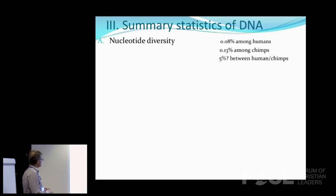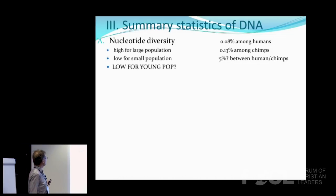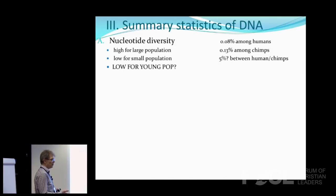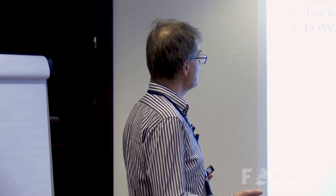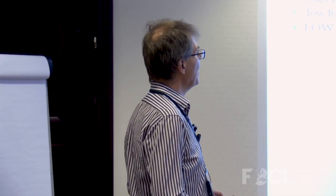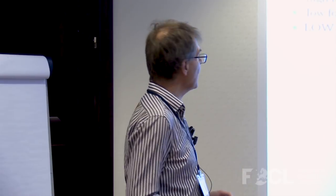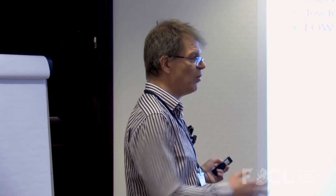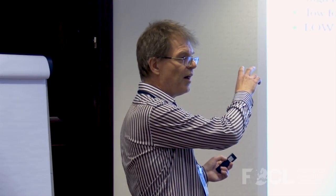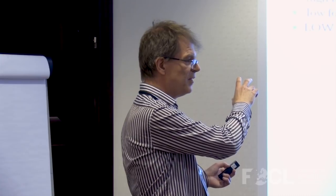Having talked about genetic data, how do we summarize it conveniently? We have 3 billion nucleotides, a few million of which are SNPs. The first summary is nucleotide diversity — one single number representing the fraction of nucleotides where we differ. It's about 0.08% among humans, 0.13% among chimps, and 5% between humans and chimps. This number tells us something about human history: a large population has more variation, a smaller population has lower variation. It is typically argued that a young population should have small diversity, and that this level seems too large for a young humanity — but if we allow Adam and Eve to be created with diversity, things could change.